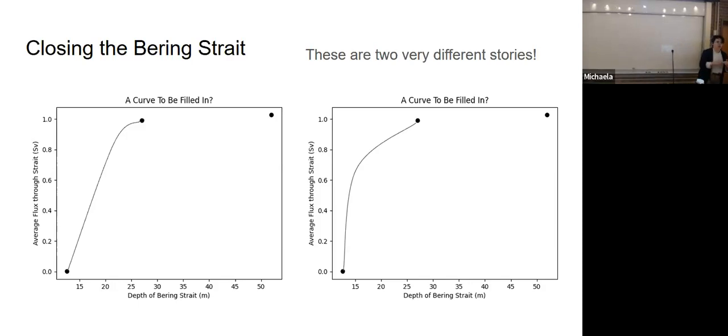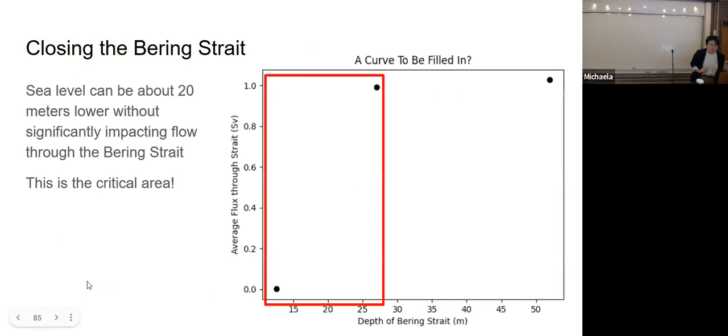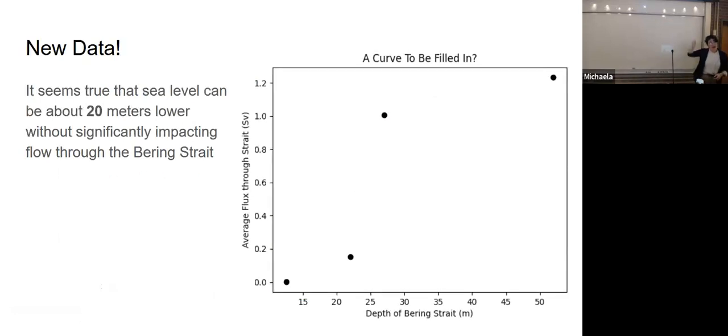These two results have a really different implication for a Bering strait that's, say, 17 meters deep. In this situation, a 17 meter deep Bering strait still lets a lot of water through. In this situation, not as much is getting through. This is what we want to know. When I made these slides earlier this week, I didn't have an answer for you. But yesterday, in my coding for earth science class, we ran this model and we got a result. That's what it looks like. I actually gasped when this figure popped up.